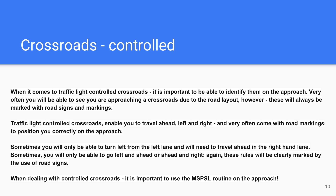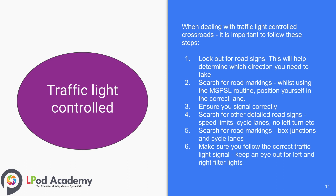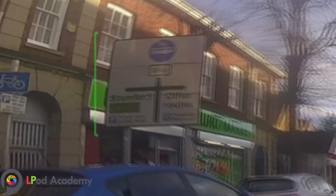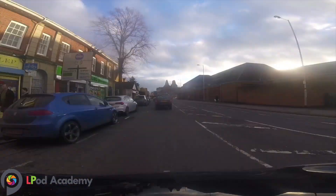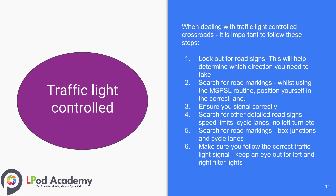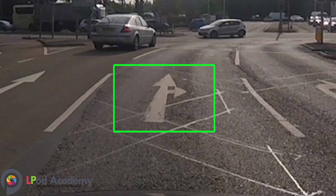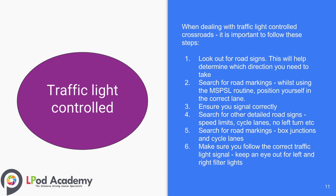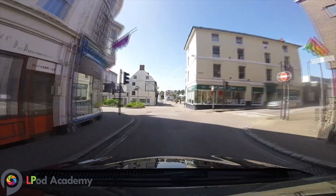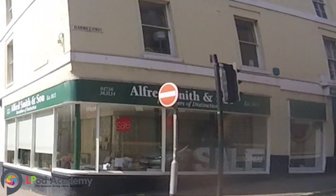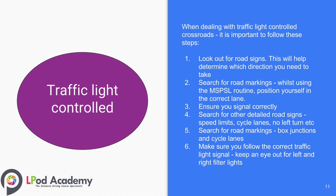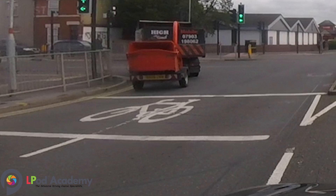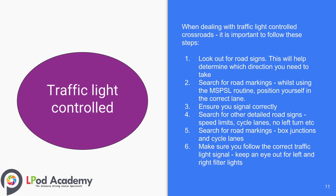When dealing with controlled crossroads, it is important to use the MSPSL routine on the approach. Look out for road signs — this will help determine which direction you need to take. Search for road markings whilst using the MSPSL routine and position yourself in the correct lane. Ensure you signal correctly and search for other detailed road signs such as speed limits, cycle lanes, and no left turn signs. Search for road markings including box junctions and cycle lanes. Make sure you follow the correct traffic light signal and keep an eye out for left and right filter lights.